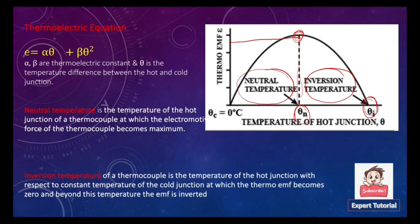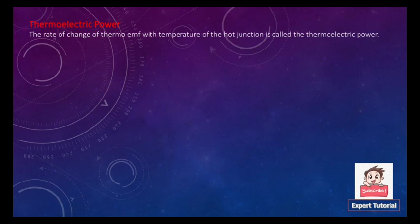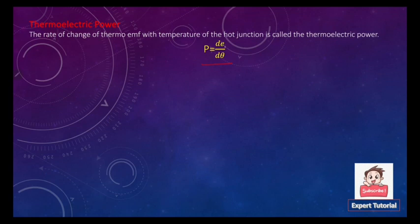Now coming to the next topic: thermoelectric power. The rate of change of thermo EMF with temperature of the hot junction is known as thermoelectric power. It is given by P equals dE/dθ, where E is the EMF and θ is the temperature.